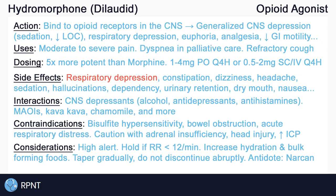If given IV, it is recommended that hydromorphone is given over at least 2 minutes to help prevent rapid CNS depression. Increase hydration and bulk forming foods to reduce the risk of constipation. It is important not to discontinue opioids like hydromorphone abruptly, but to instead gradually taper the dose according to the provider's instructions, to reduce the risk of withdrawal symptoms and severe pain.